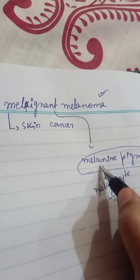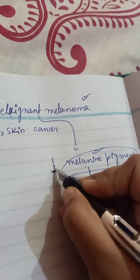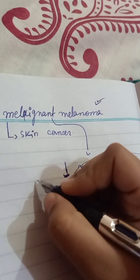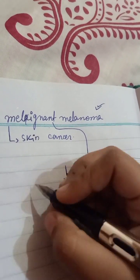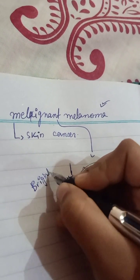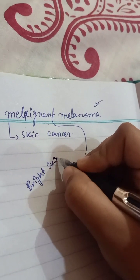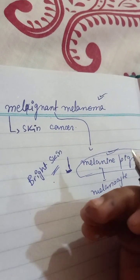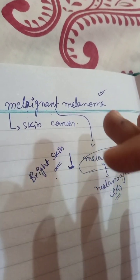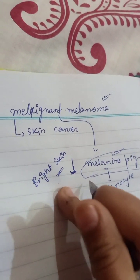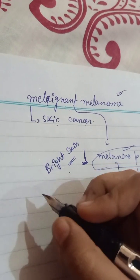This disease occurs when the melanin pigment is very low. It is more common in people with bright or fair skin, basically because they do not have enough melanin pigment on their skin. That is why skin cancer occurs in them.